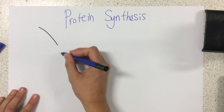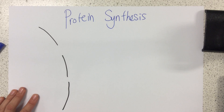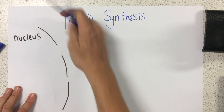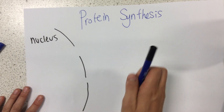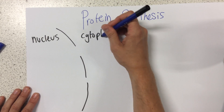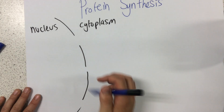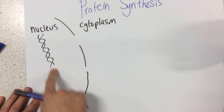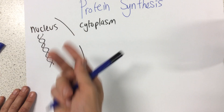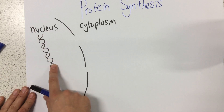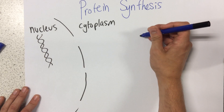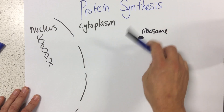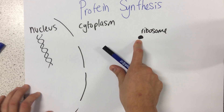What I'm drawing right here is a nucleus. So this is within a cell. This part here is the nucleus, and just outside this part here we have the cytoplasm. Now within our nucleus we have our DNA. Now we also have this other structure over here called a ribosome. What a ribosome is, is this is the actual site of protein synthesis.